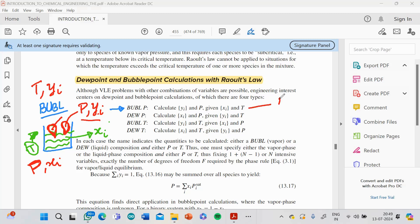So coming to this particular first one, it is known as bubble P calculations—that means we are trying to find the bubble point pressure. And the third one is bubble T calculations, temperature calculations. That means these are the known quantities and these are the unknown quantities.